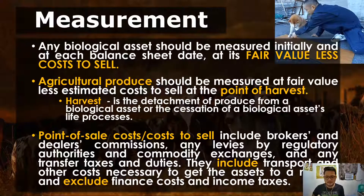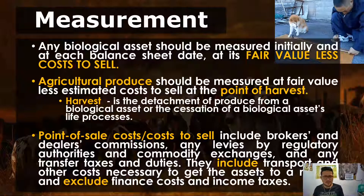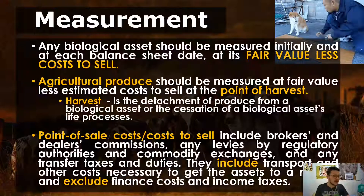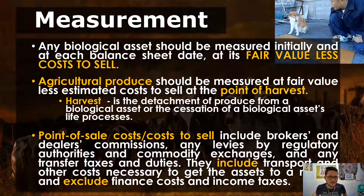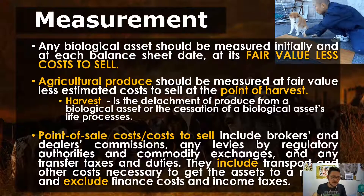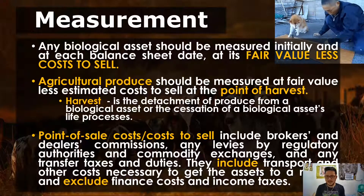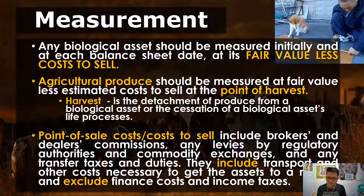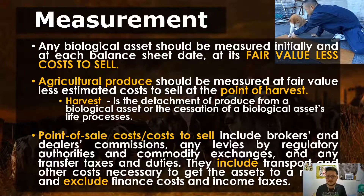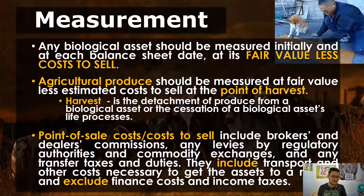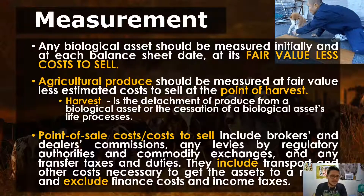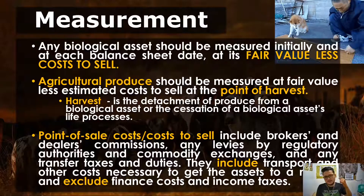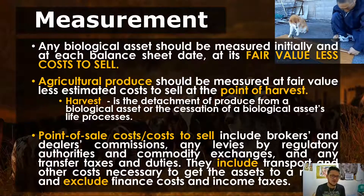Regarding fair value less cost to sell: fair value is self-explanatory — it's the price at which a buyer is willing to buy and a seller is willing to sell at arm's length, a fair transaction. Cost to sell needs more description because not everything you spend can be deducted from fair value. The allowable deductions include: brokers' and dealers' commissions, levies by regulatory authorities and commodity exchanges, transfer taxes and duties, transportation, and costs necessary to get the assets to a market. This excludes finance costs and income taxes.